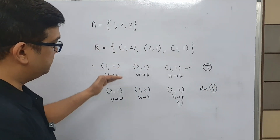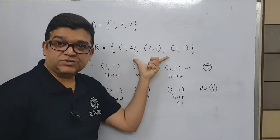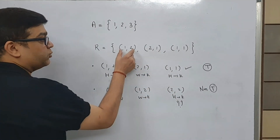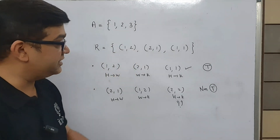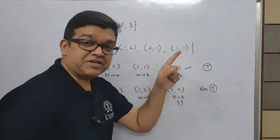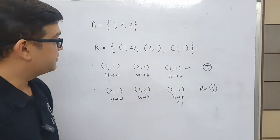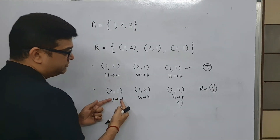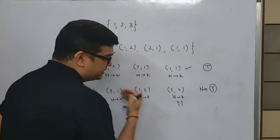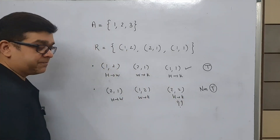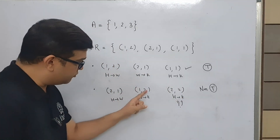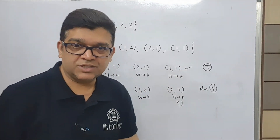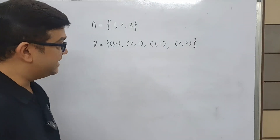So overall this particular relation is non-transitive. When you look at just one example it may feel transitive, but you need to check for every ordered pair. Here, according to this ordered pair, husband has a relation with wife, wife has a kid, but husband does not accept the kid: (2,1), (1,2), but (2,2) is missing. Therefore this relation is non-transitive.